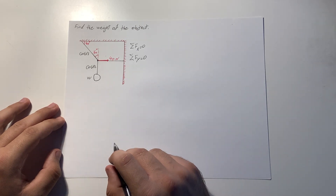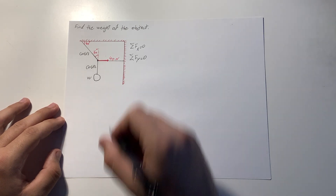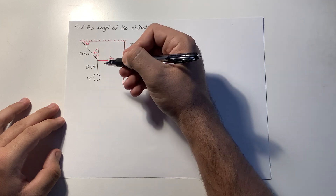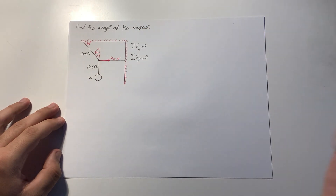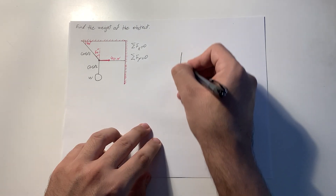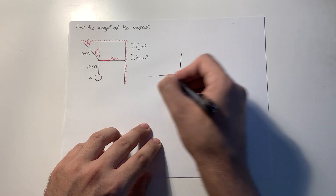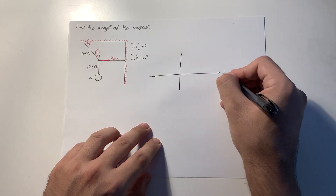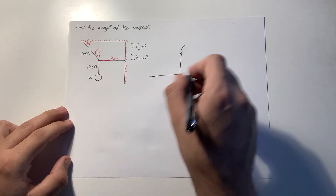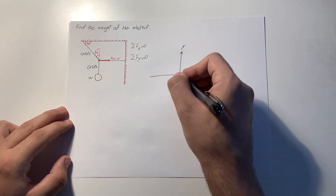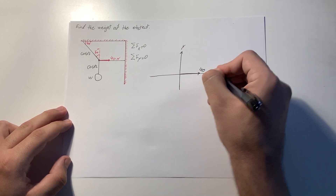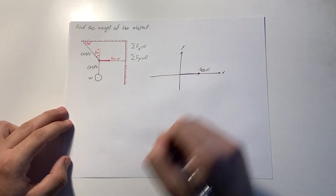In order to find the weight of this object, we need to find the tension in this chord — then we're done. Let's draw a free body diagram with x and y axes. In the x-direction, we have 40 Newtons in that direction.